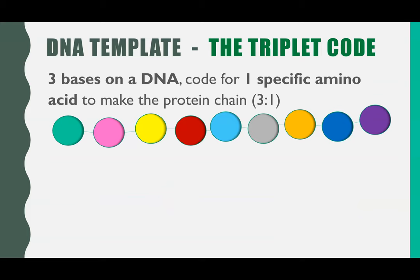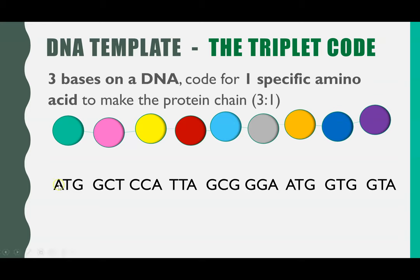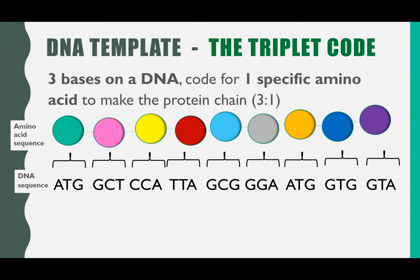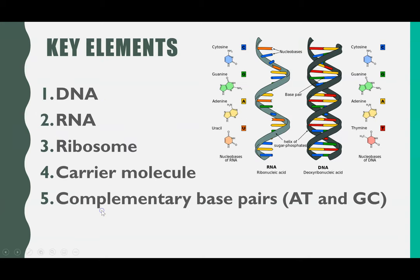So how does DNA actually code for a protein? It's linked to this idea of the triplet code. On your DNA you have bases and those bases create a code. This sequence of letters is the genetic code, and every 3 letters or every 3 bases codes for 1 amino acid. So as you go along your DNA sequence, that's coding for 1 amino acid every 3.